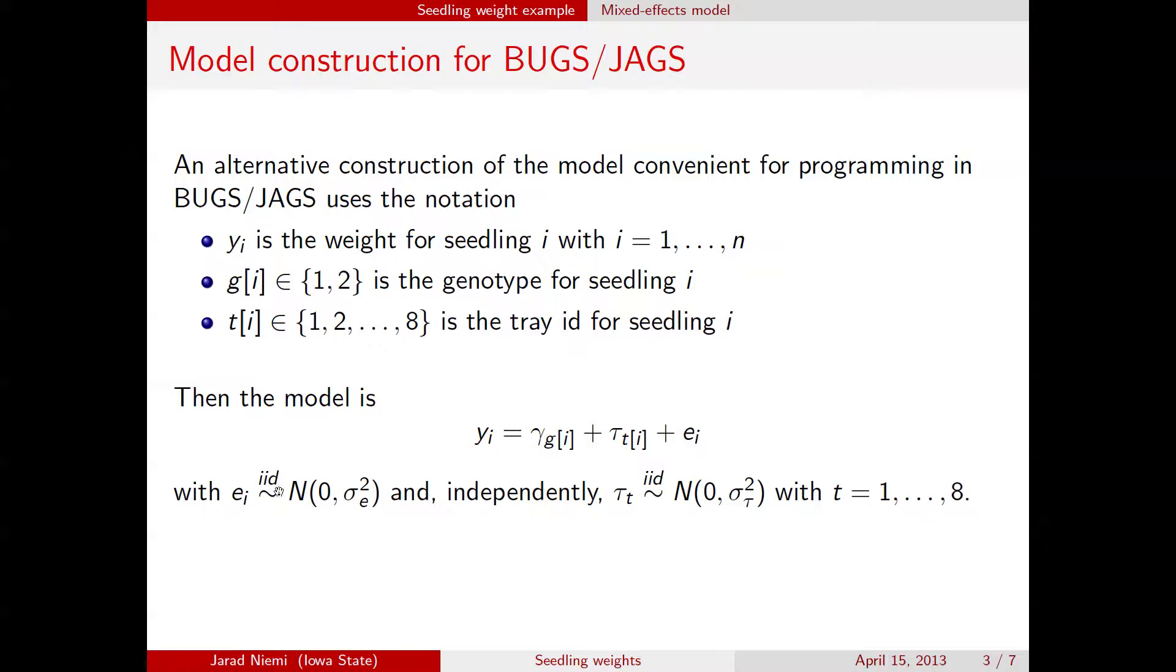The assumptions are that that white noise is iid normal with variance sigma squared e, and the trays are normally distributed, again iid, mean 0, variance sigma squared tau.